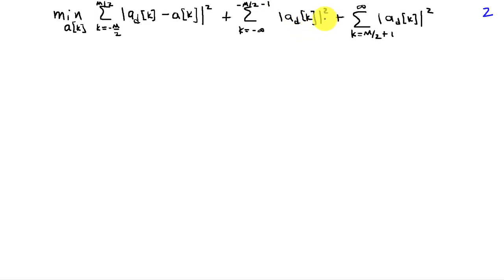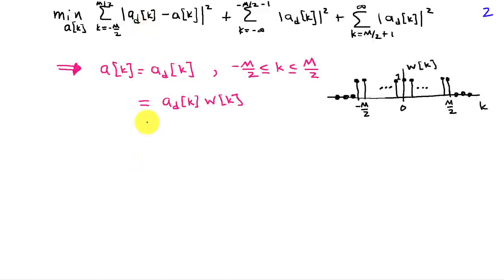In the regions outside the interval, we have |a_d[k]| squared, and at this point it becomes almost trivial to identify the solution: we choose a[k] so that the magnitude squared term goes to zero by setting a[k] equal to a_d[k] on the range minus m over 2 to m over 2. This can be viewed equivalently as obtaining a_d[k]—which in general runs from k equals minus infinity to infinity—and multiplying by a window w[k].